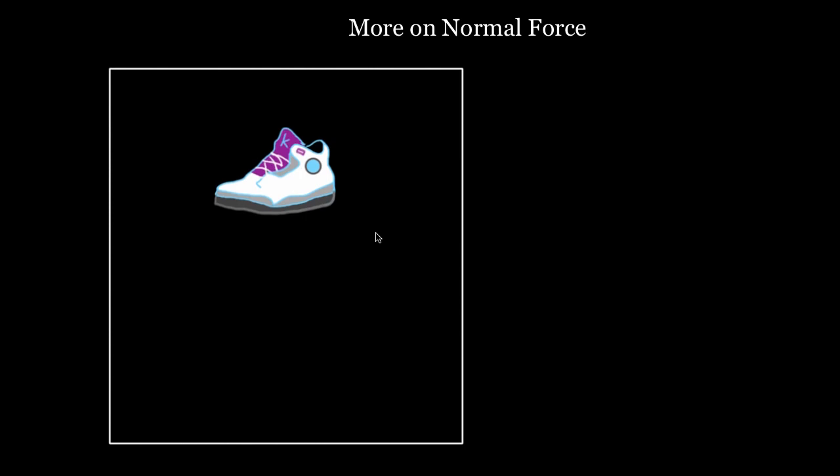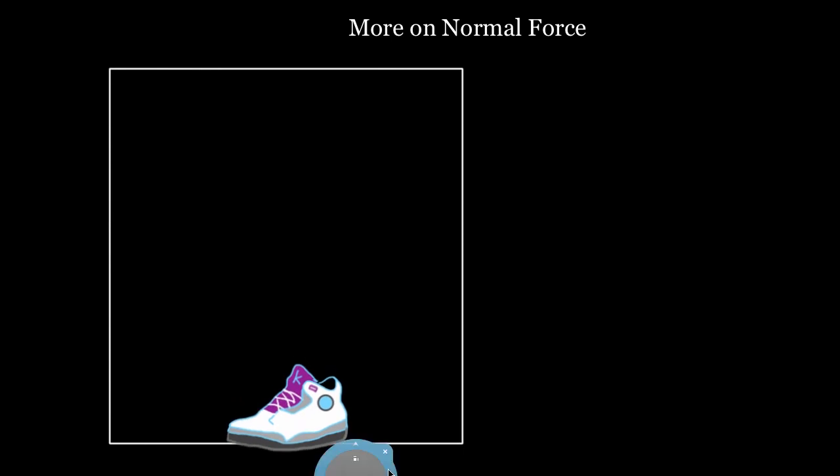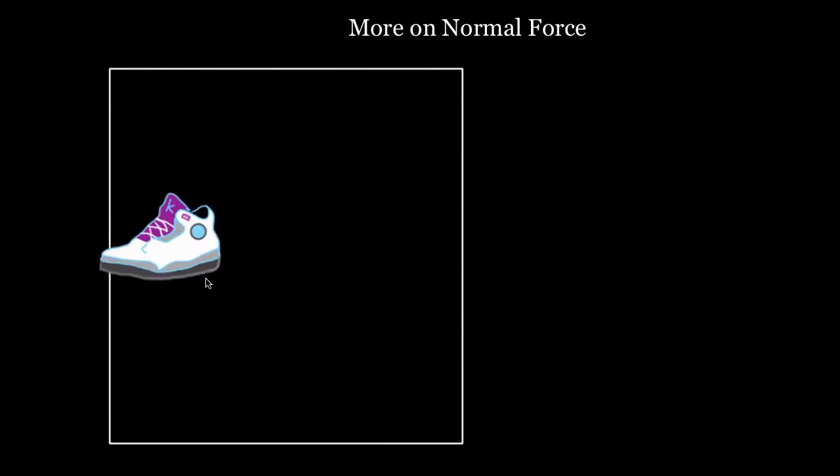So one misconception is that people forget normal force is a contact force. You only have a normal force when two surfaces are in contact. So when the shoe's in contact with the floor, there'll be a normal force on the shoe and a normal force on the floor. Or if the shoe were in contact with the wall, there'd be a normal force on the wall and a normal force on the shoe.